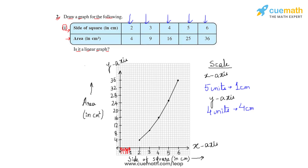As we can see, the graph is not increasing linearly — it is increasing exponentially. So we can say that it is not a linear graph. This is how we answer the second part of this exercise.